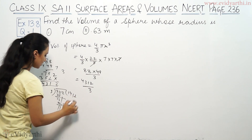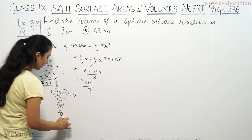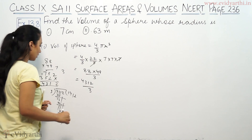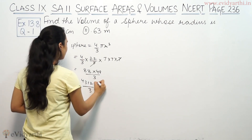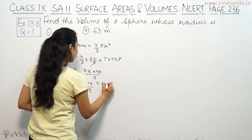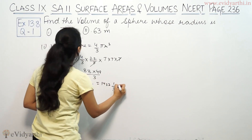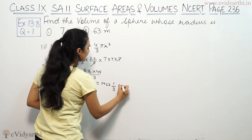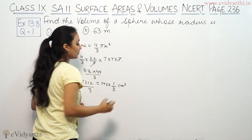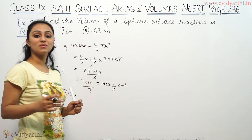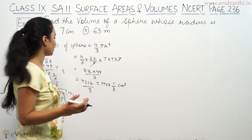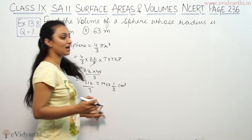3 sevens are 21. Dividing through: 1437 and one-third cubic centimetres. Volume is measured in cubic units, so this is the answer for part 1.